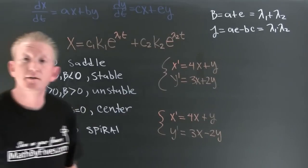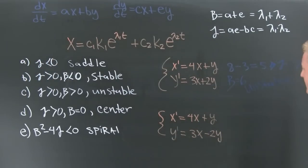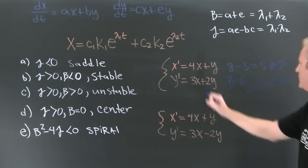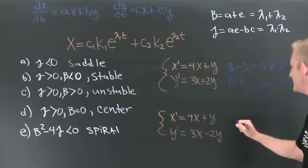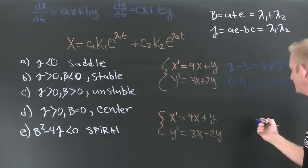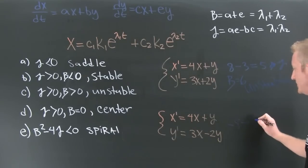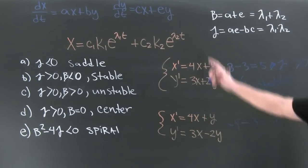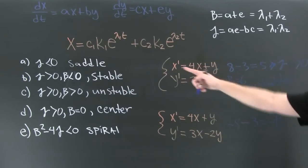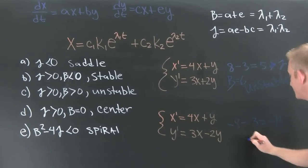Finally, we can hit up some examples. So this one is going to be negative eight minus three, which gets me negative eleven, which makes this smaller than zero — so this is a saddle.